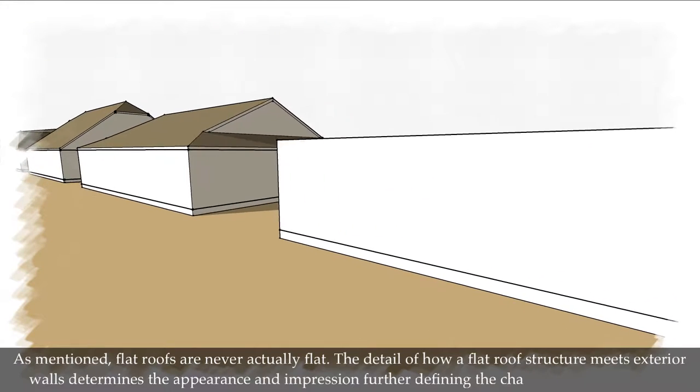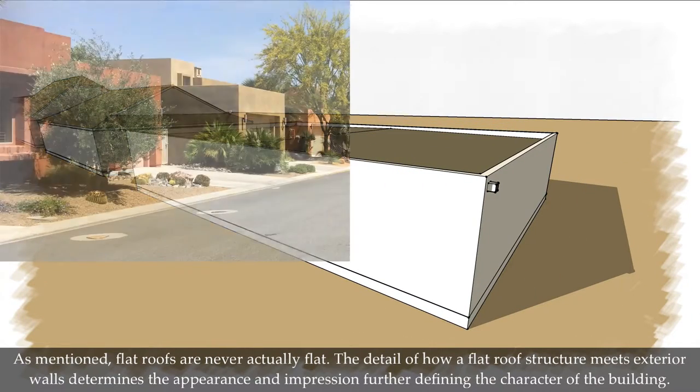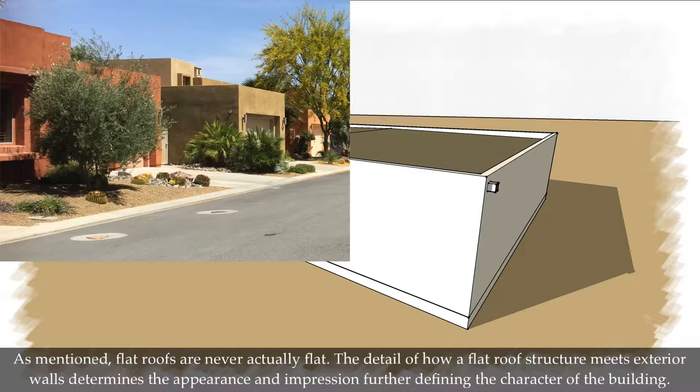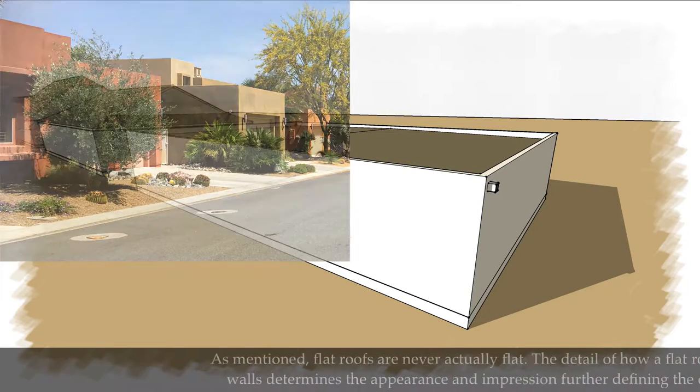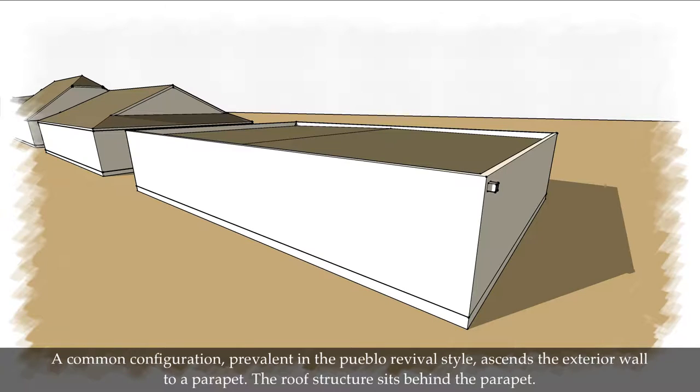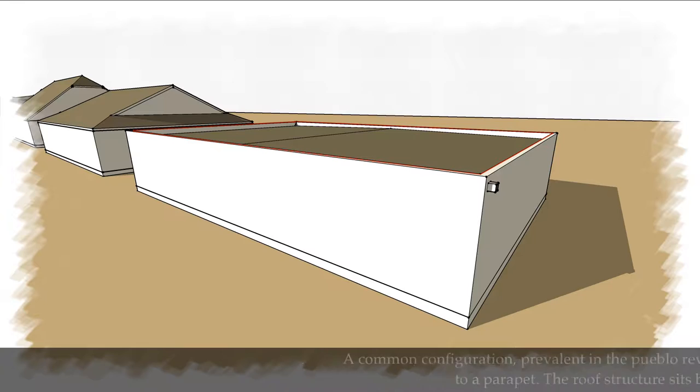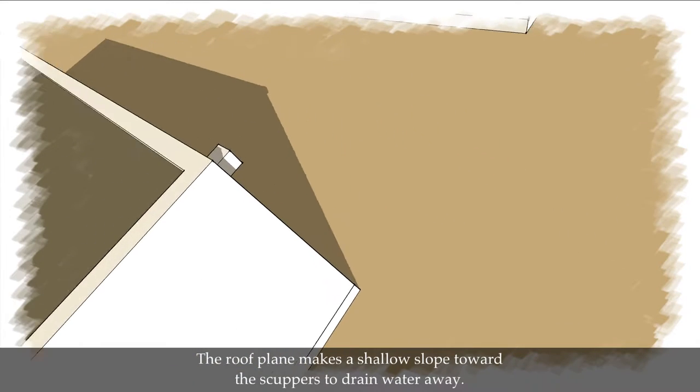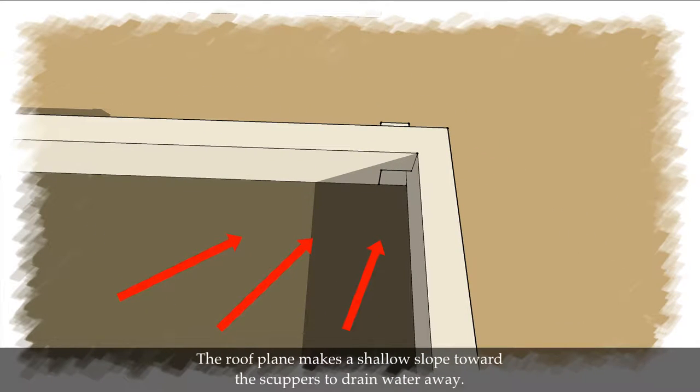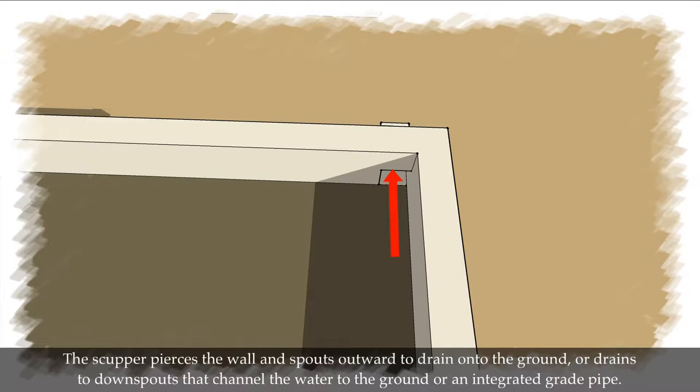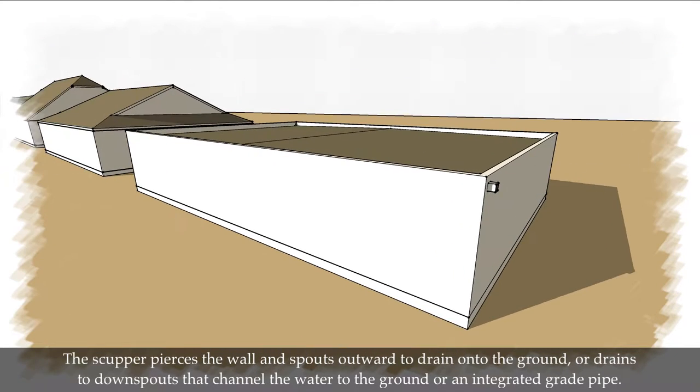As mentioned, flat roofs are never actually flat. The detail of how a flat roof structure meets exterior walls determines the appearance and impression further defining the character of the building. A common roof configuration, prevalent in the Pueblo Revival style, meets the outer wall at a parapet. The roof structure sits behind the parapet. The roof plane makes a shallow slope towards scuppers to drain water away. The scupper pierces the wall and spouts outward to drain onto the ground, or drains to downspouts that channel the water to the ground or into an integrated grade pipe.